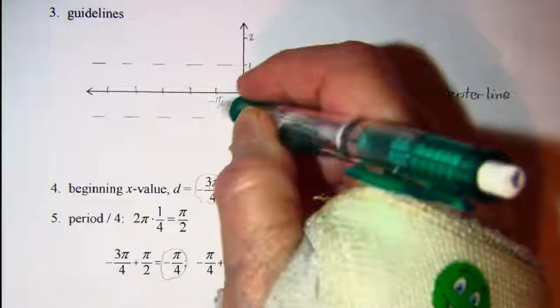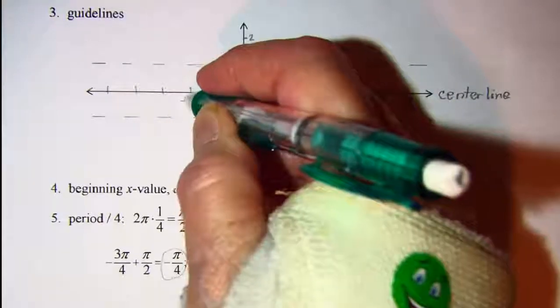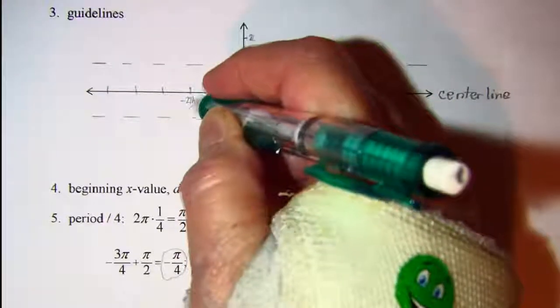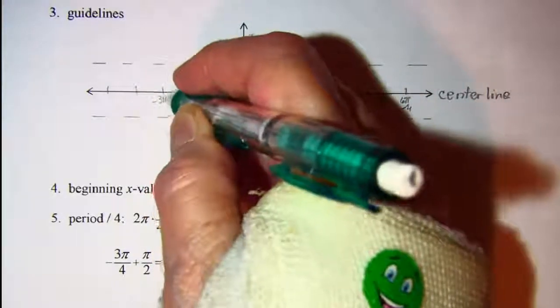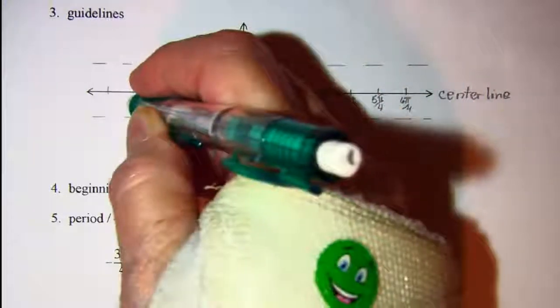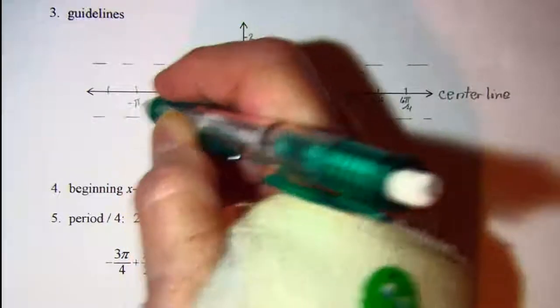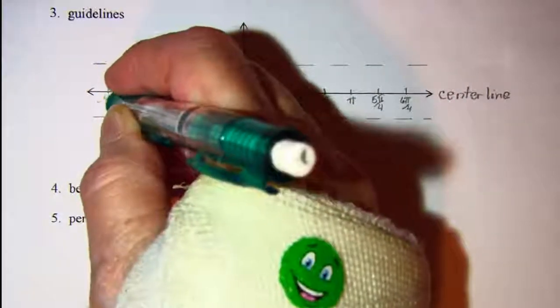And then I have a negative 3 pi over 4 starting value. So let me label it this way as well. Negative pi over 4, negative 2 pi over 4, negative 3 pi over 4, negative 4 pi over 4, which is negative pi, and negative 5 pi over 4.